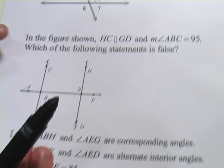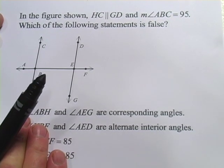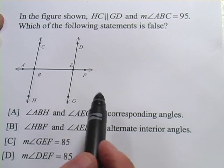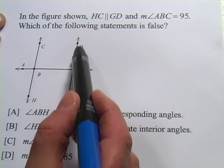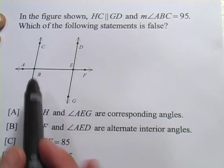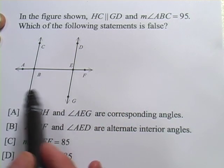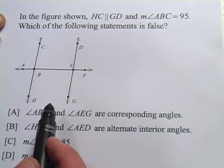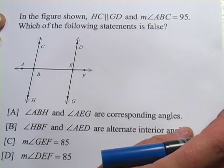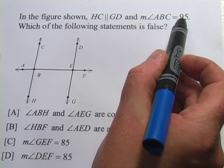Let's look at another problem here. It says in the figure shown, HC is parallel to GD. So HC is this one, GD is this one. So same kind of setup. It's just been sort of thrown on the side from the other one. And here's our transversal crossing both those parallel lines. And it says, and the measure of angle ABC equals 95.